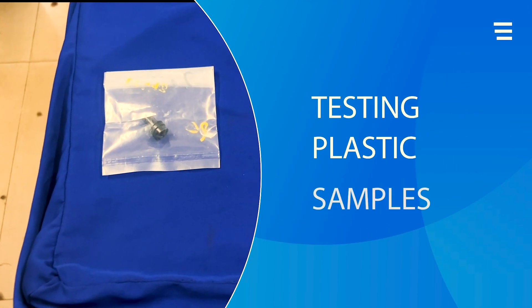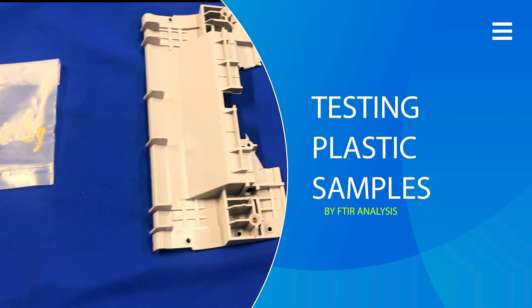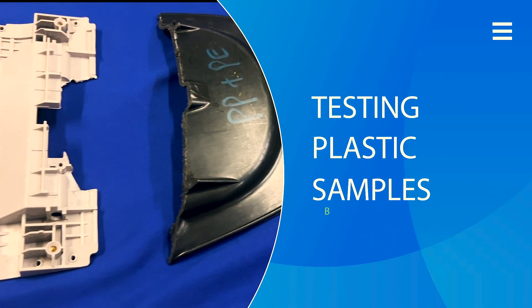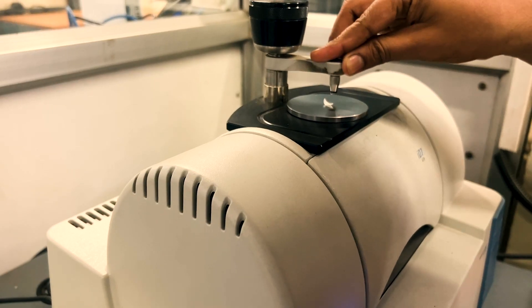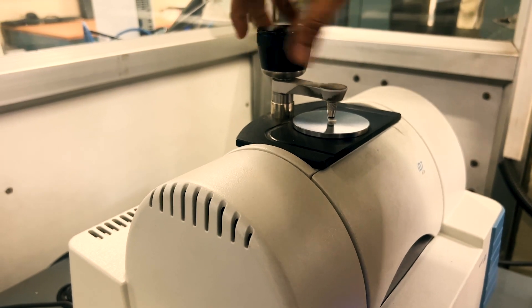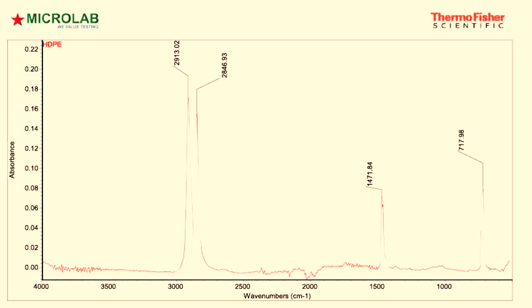I have four plastic samples pulled from different applications. The first sample is a white bar used as part of a board. We are going to cut a thin slice from this material and place it on the instrument opening. After a minute, the final graph is displayed, and we have an option to automatically match the polymer fingerprint with the list of polymers in the database to get the closest equivalent.